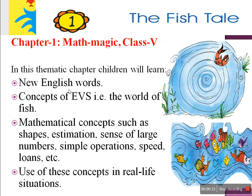First, a few English words. Second, the concept of EBS — that is the world of fish — and mathematical concepts such as shapes. Shapes you must know: triangle, rectangle, circle, etc. Estimation means to know about approximate values.